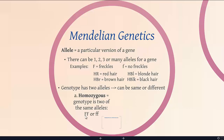We have a specific word for when both of the alleles are the same. So if you have big F, big F, or little f, little f, you're homozygous. Similarly, if you have two alleles for red hair, or two alleles for blonde hair, you are homozygous.